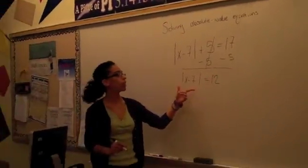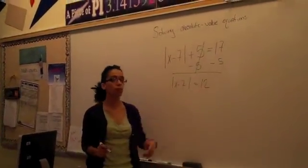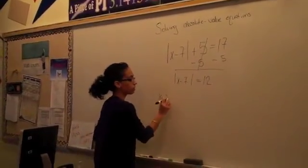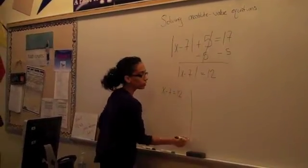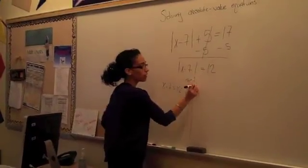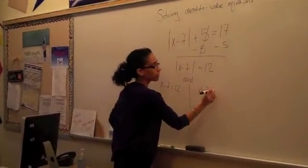After we get to this point where we have an absolute value equaling a number, we get to separate them. x minus 7 equals 12. The line, which means and, x minus 7 equals negative 12.